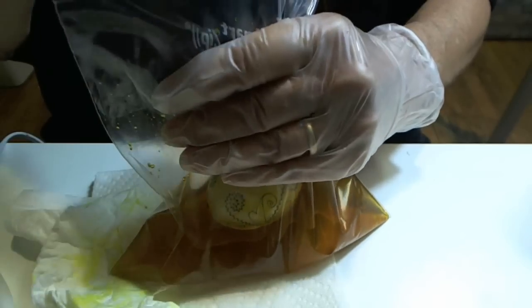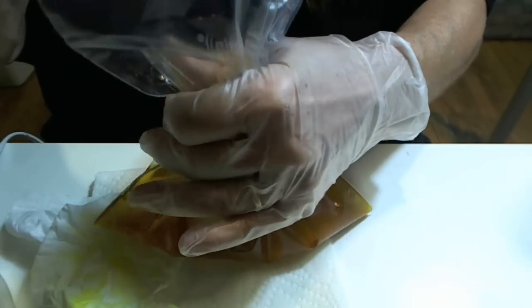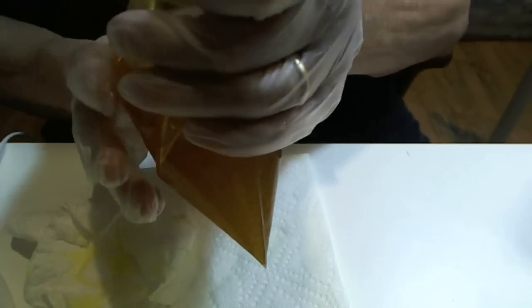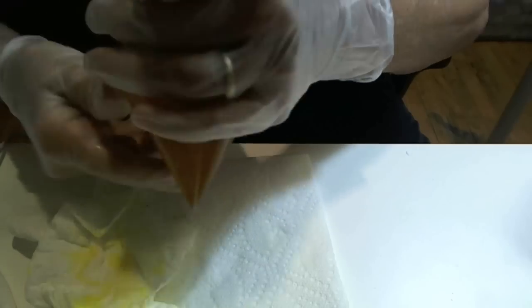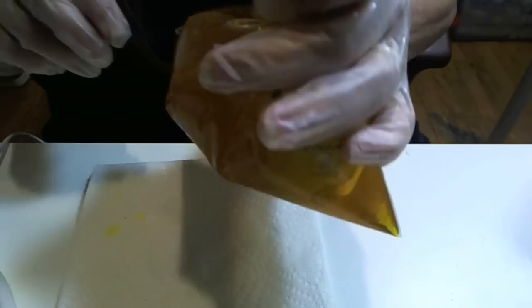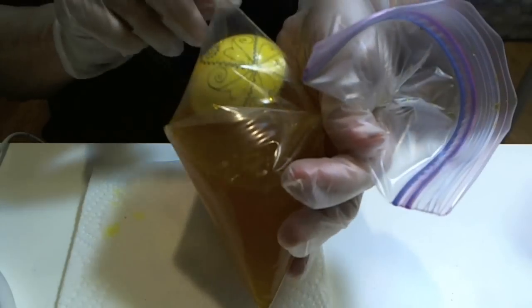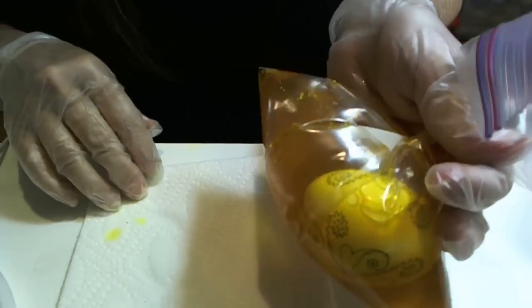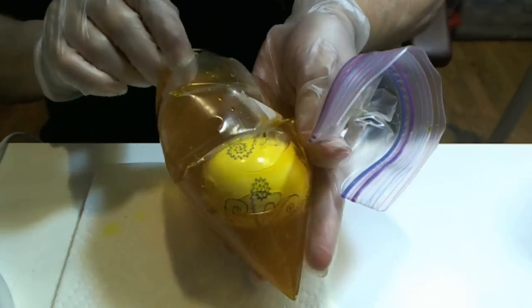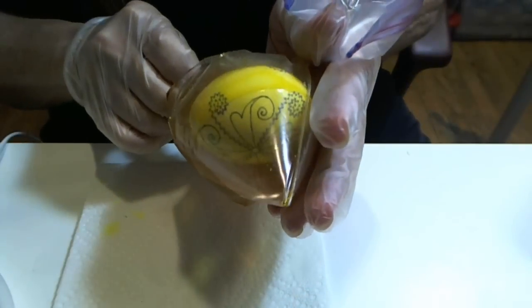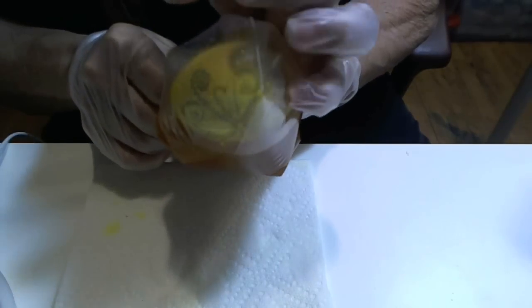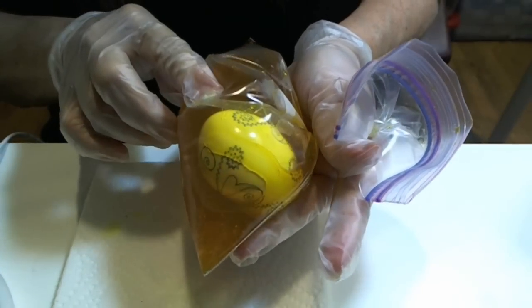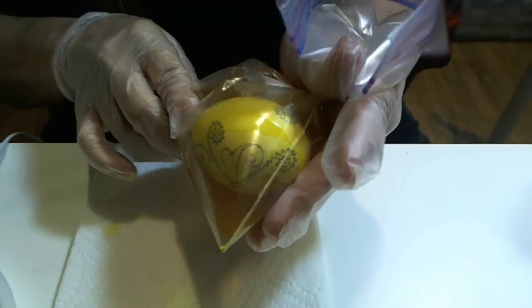After putting the egg into the baggie, I squeeze out all the air that I can from the baggie. I give the baggie a twist and I just swish the egg around. I can walk around, answer the phone, do a chore or two if necessary. Depending on how bright or how intense you want your dye color to come out is how long you would keep it in the dye.